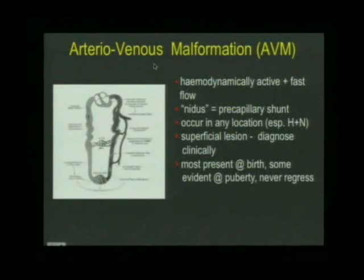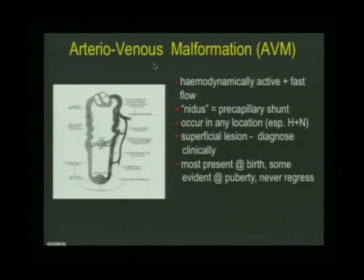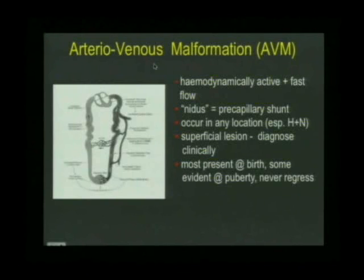Arteriovenous malformations are different from slow-flow lesions because they are hemodynamically active. The underlying lesion is called the nidus — it's a pre-capillary shunt. These nidi occur at a pre-capillary level, so the arteries taking blood to them are often enlarged and ectatic. They shunt through the nidi, which increases venous return and causes enlargement of the veins. If the shunting is large, you can actually get cardiac failure as well.